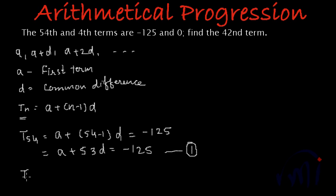And then we are given that 4th term is equal to 0. So 4th term, that will be t4, can be written as a plus (n-1), that is (4-1), 3d, this will be equal to 0. Let me call it as equation number 2. So we have got two equations and we have two variables, a and d.